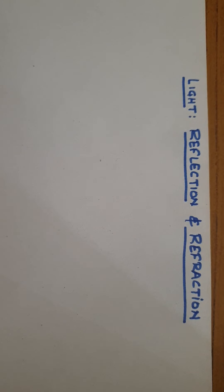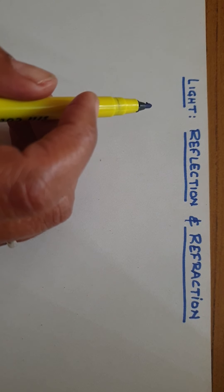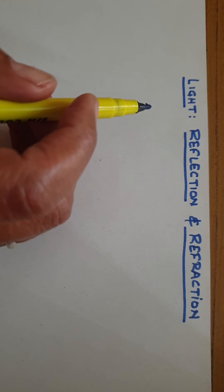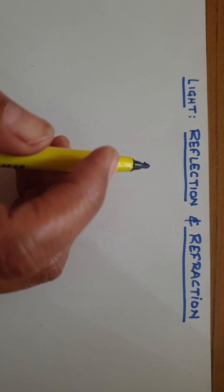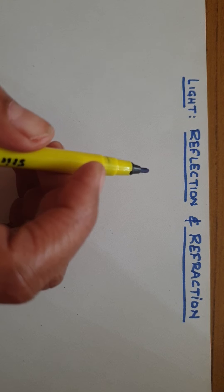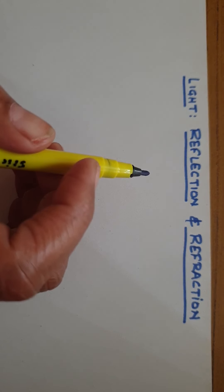Good morning students. We see a variety of objects in the world around us. However, we are unable to see anything in a dark room, but on lighting up the room, things are visible. What makes things visible? As you know, it is light. You all learnt in previous classes that light seems to travel in a straight line and it is also a source of energy.